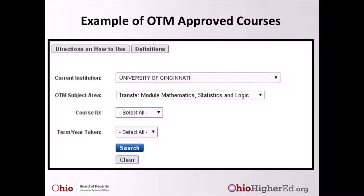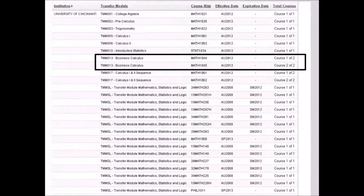To search for Ohio Transfer Module approved courses, fill in search criteria as needed. You can also choose to fill in no search criteria to find all OTM approved courses. This example searches for all University of Cincinnati approved Transfer Module Mathematics, Statistics, and Logic courses. It is important to pay close attention to the effective date and expiration date to ensure a course has not expired. For example, students need to successfully complete both MTH1044 and MTH1045 to receive an OTM guarantee for a business calculus course.